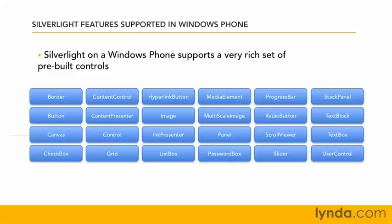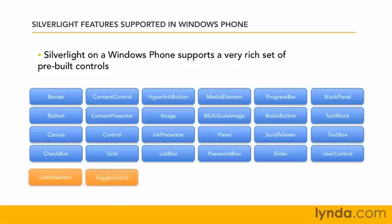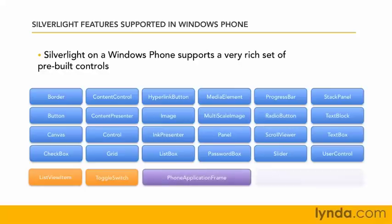Some of these are not big surprises — Button, Canvas, Checkbox, Hyperlink Button — these are standard controls you're probably used to if you've worked with Silverlight or done any web development. Windows Phone also provides custom controls specific to the phone experience, such as a list view item and a toggle switch. And of course there are controls that represent the application frame and application page, which contain your application within the phone itself.